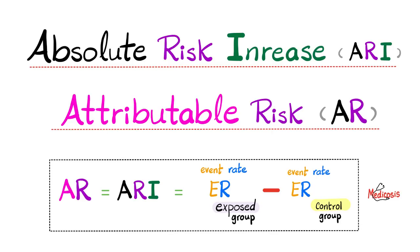In previous videos, we talked about the measures of central tendency such as the mean, the median, and the mode. We discussed the measures of dispersion such as the range, the interquartile range, the standard deviation, and the z-score. We covered sensitivity versus specificity, positive predictive value versus negative predictive value, positive likelihood ratio versus negative likelihood ratio, consistency versus validity, incidence versus prevalence, number needed to treat versus number needed to harm, and absolute risk versus relative risk.